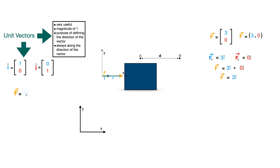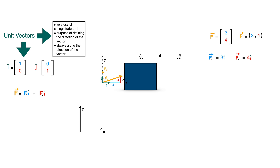What if the force is acting horizontally? In that case, the force vector lies on the x-axis, meaning it has no y-component. Vector F will equal Fx i-hat plus zero j-hat, which simplifies to Fx i-hat. Similarly, if force is acting vertically along the y-axis, there will be no x-component at all. In these cases, the calculations become fairly simple and straightforward.